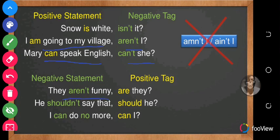Now let's look at negative statements with a positive tag. 'They aren't funny, are they?' As the rule says, if the statement is negative the question tag needs to be positive. This is a typical example of a negative statement with a positive tag. 'He shouldn't say that, should he?' and 'I can do no more, can I?' — these are all examples of negative statements and positive tags.